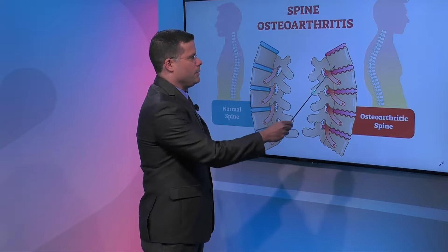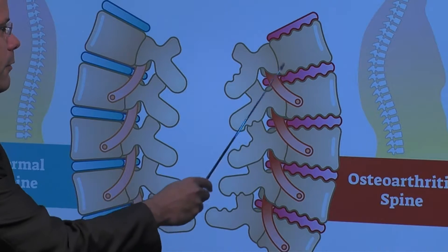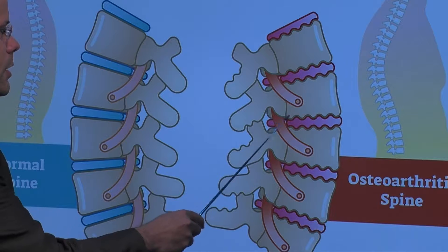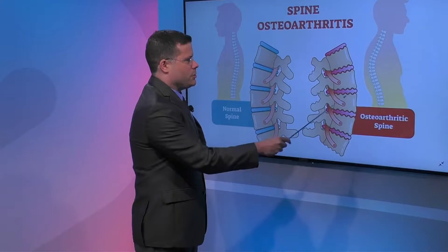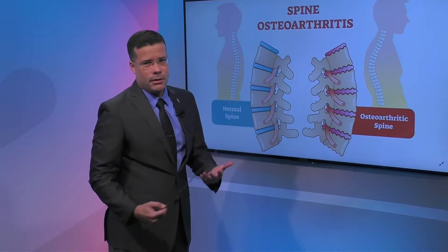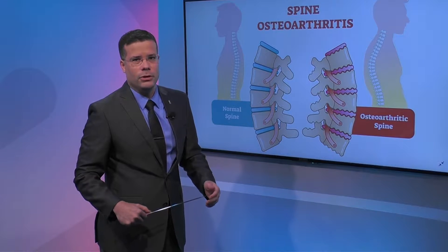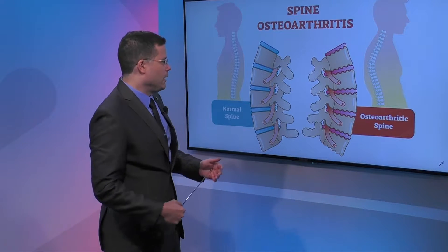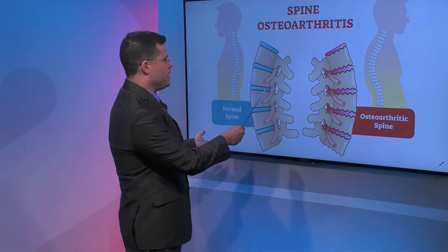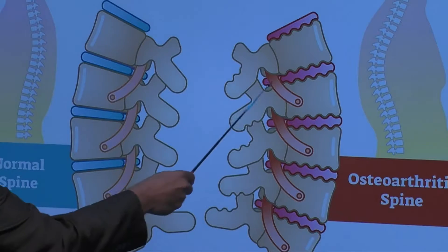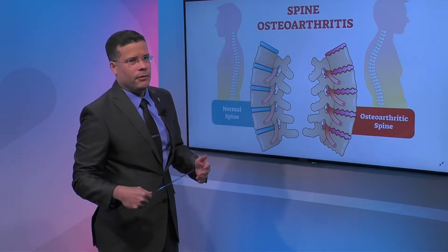So basically, the spine is formed by the bones of the spine, which are these squares that you guys see over here, and in between we have these structures which are called the discs. They serve as cushioning in between the different segments. As you can see, you can see a normal one — how smooth it is at the levels — and how irregular the levels become with degeneration.